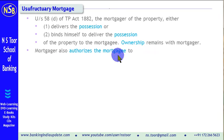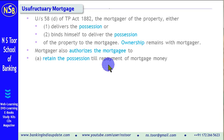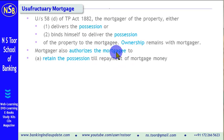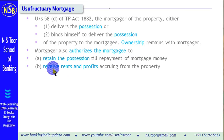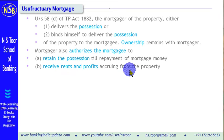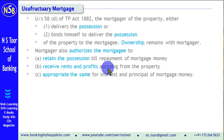The Mortgager authorizes the Mortgagee. What type of authority is given by the Mortgager to the Mortgagee? 1. Retain the possession till repayment of Mortgage money. Mortgage money means the loan. Till the loan is repaid, the possession will remain with the Mortgagee — in our example, with the bank. 2. The Mortgagee will receive the rents and profits accruing from the property. Whatever income accrues from the property, that will be received by the Mortgagee.